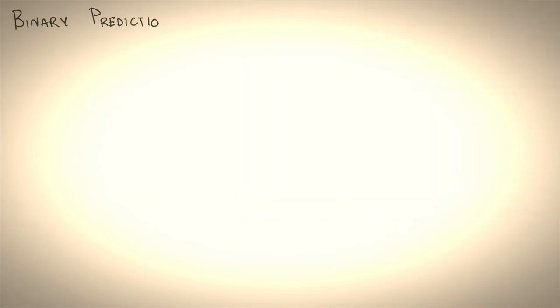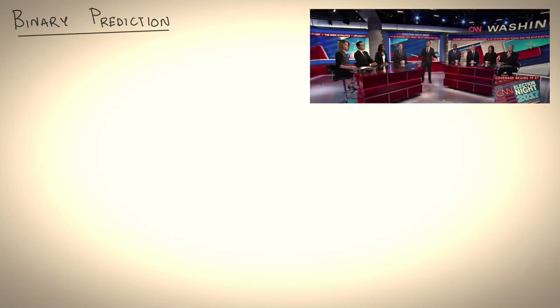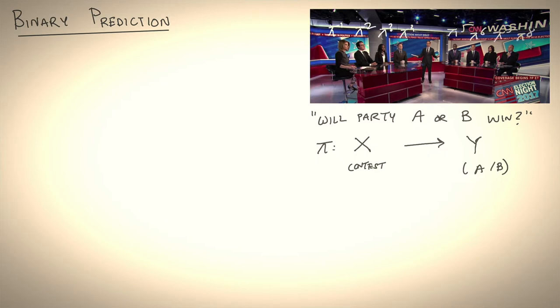We will begin with simple binary prediction. But to make things interesting, let's bring politics into the mix. Let's say you're interested in predicting the results of an election. So you want to train a learner to predict whether party A or party B would win. The learner takes as input features like who raised the most money, who has the most visibility, and so on, and predicts will candidate A or candidate B win.